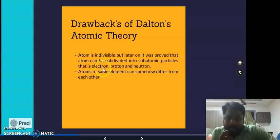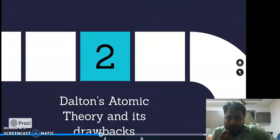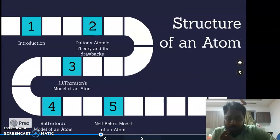Atoms contain subatomic particles such as electrons, protons, and neutrons, so Dalton's theory was violated. Also, atoms of the same element can differ from each other. Those drawbacks have been justified by the next scientist, J.J. Thomson.